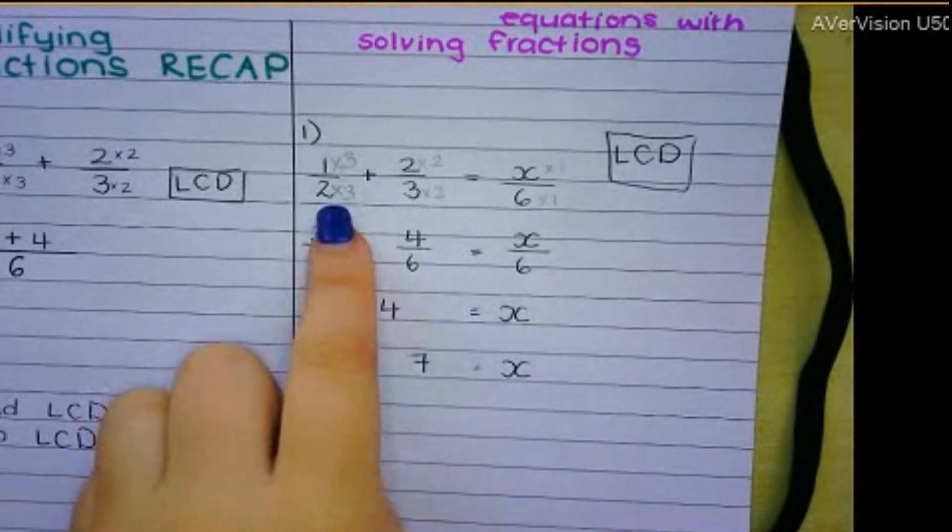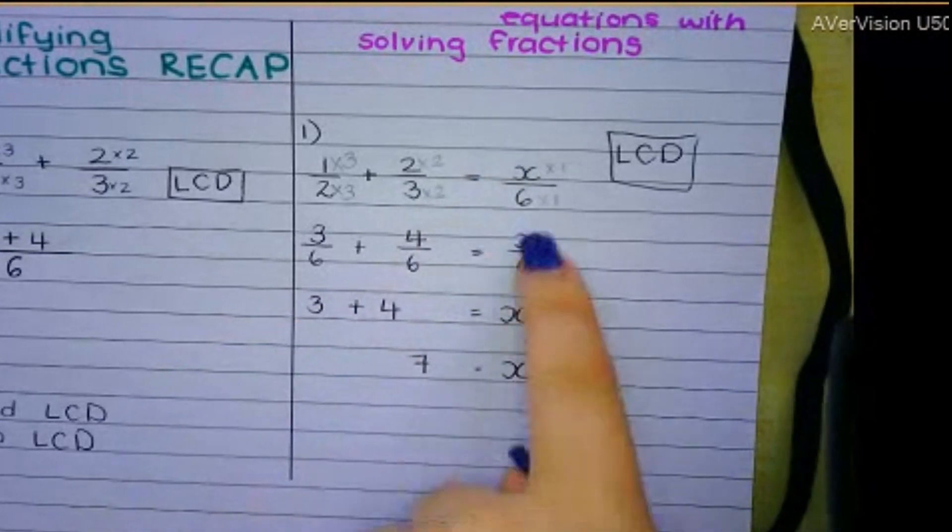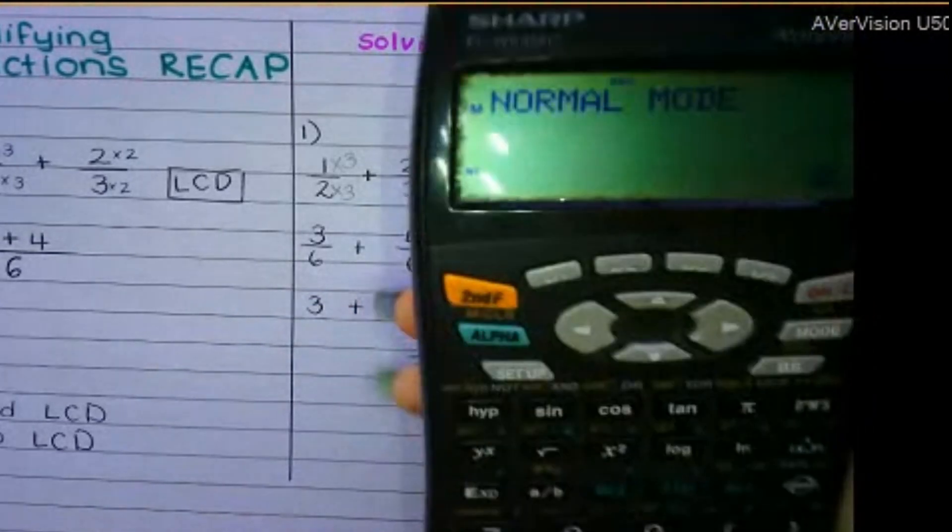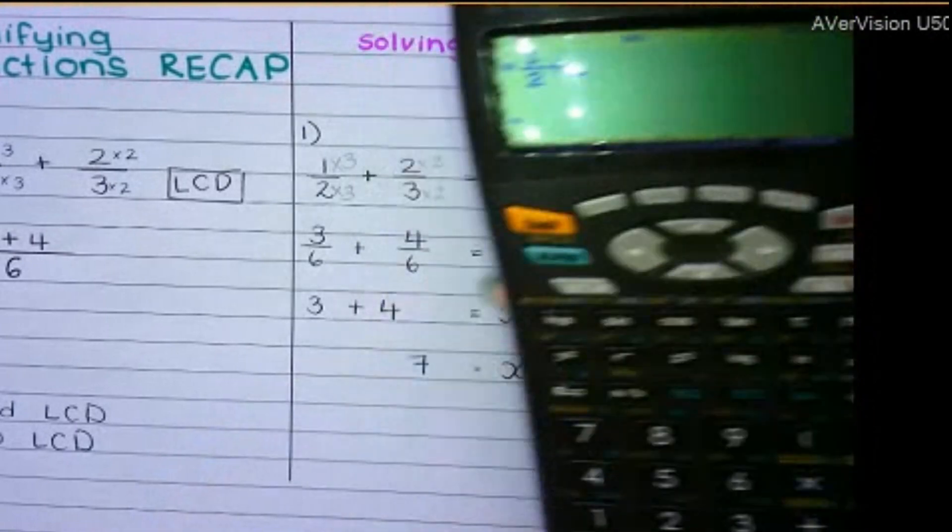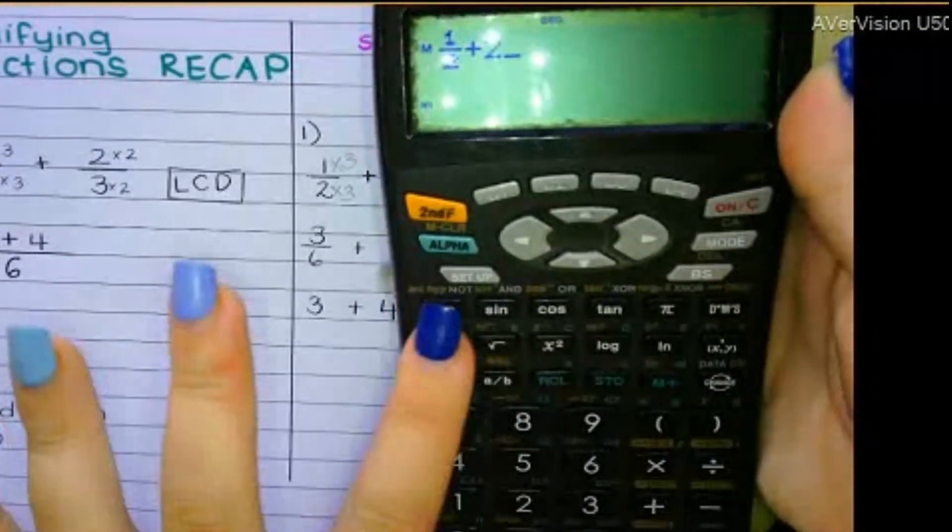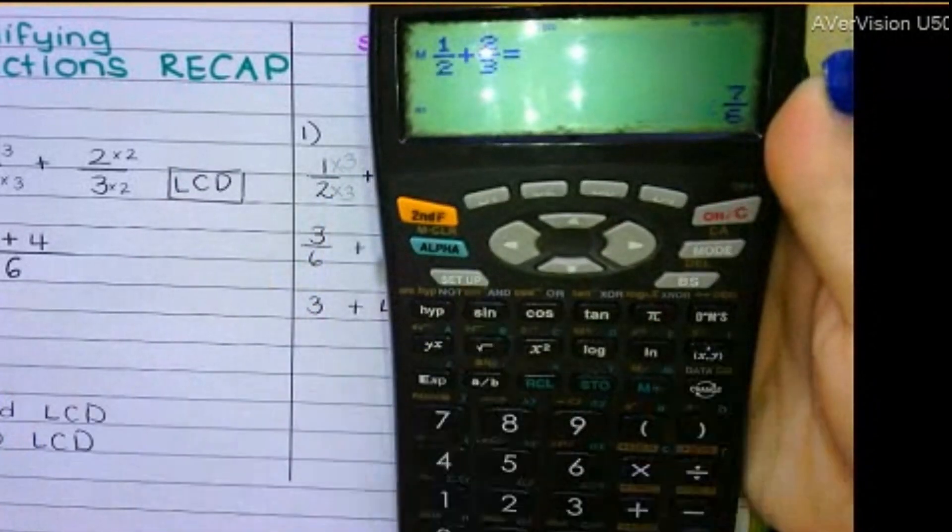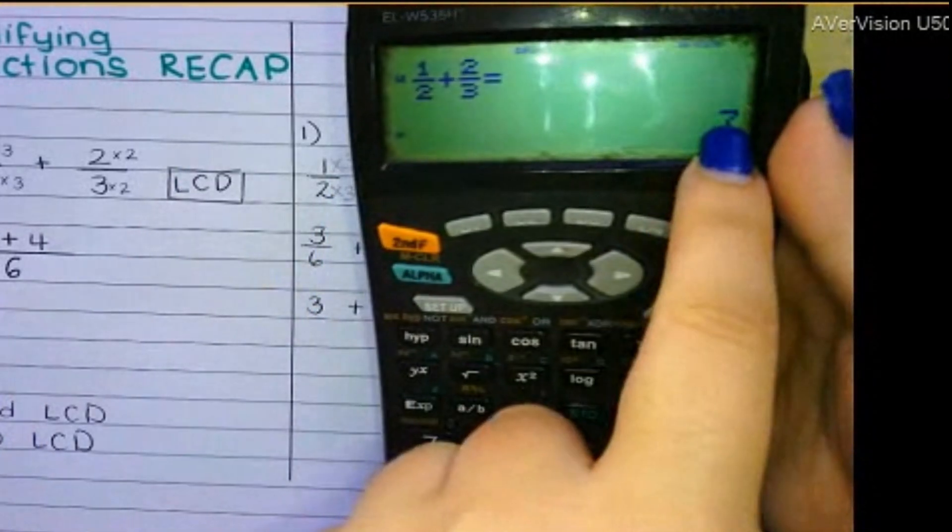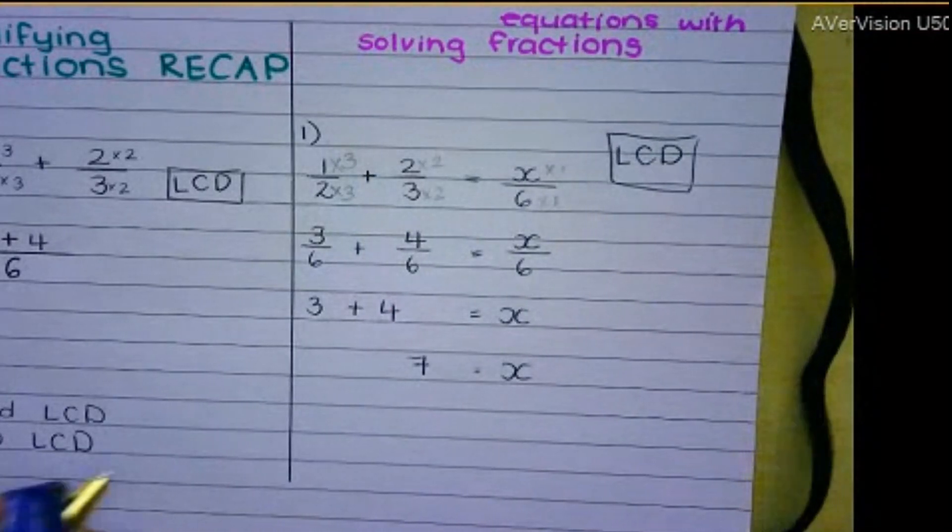And if you want to check this off in the calculator, so I'm saying a half plus 2 over 3 should give me 7. If x is 7, 7 over 6. So a half plus 2 over 3. If I press equals, it should give me 7 over 6. Yep. x is 7. And that's exactly what I got. And that's the correct answer.